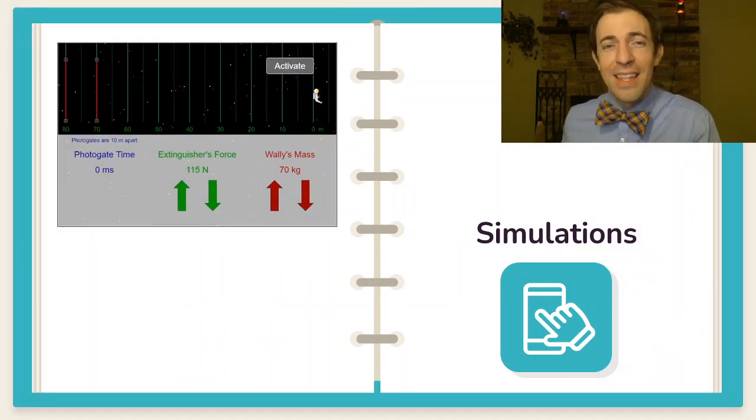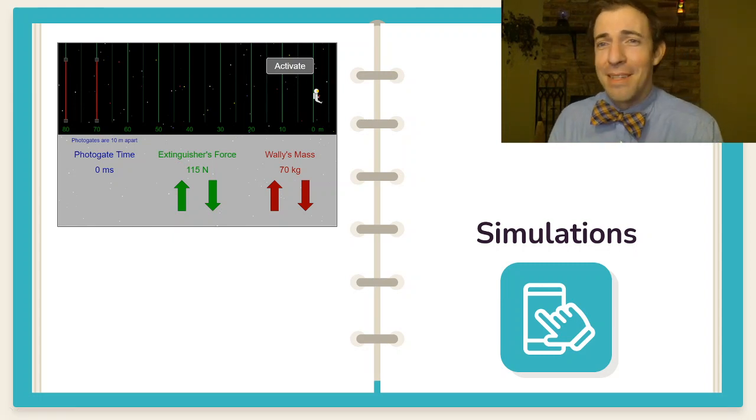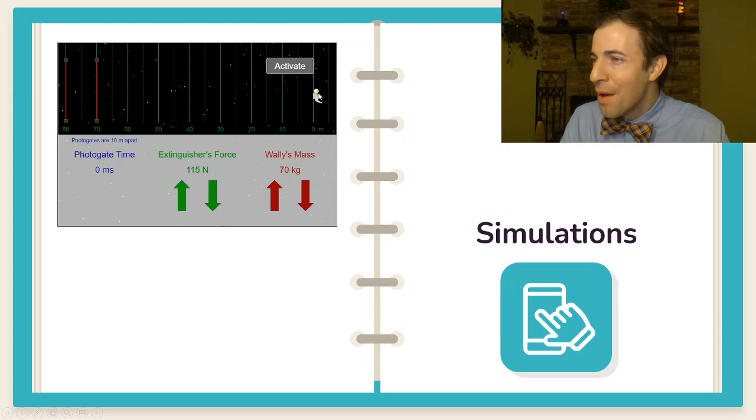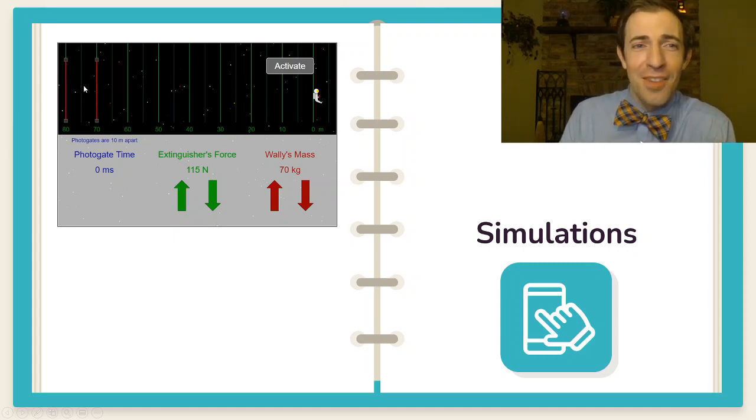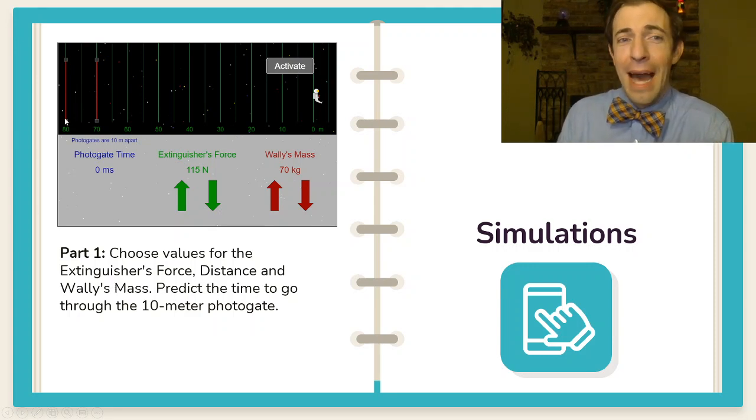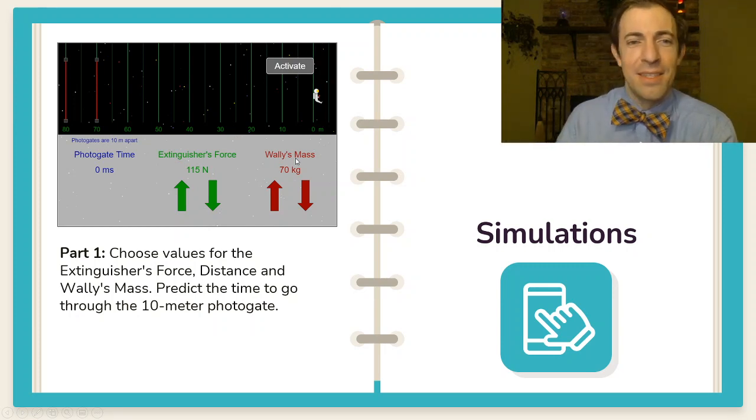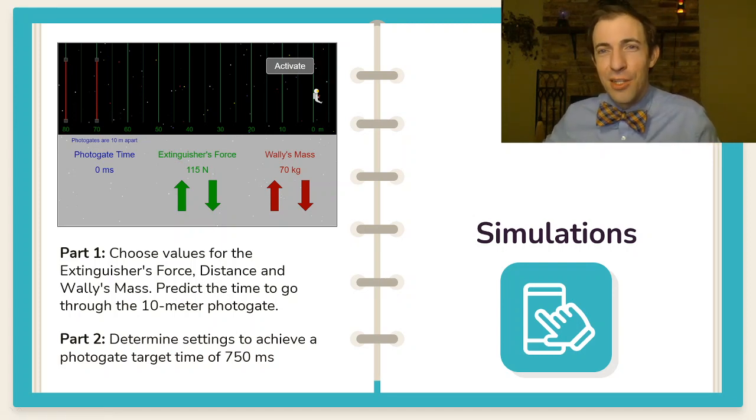And then of course I've also used simulations in my class as a way that students can interact with some of the materials. If you haven't used Physics Aviary in the past it is a phenomenal treasure trove of different simulations and online labs. This one that I use in my energy and work unit is basically a simulation of a little astronaut dude where he fires a fire extinguisher to accelerate over a certain distance and then time the final velocity in this photo gate. Now I have them choose just a random of their choice force distance and mass to then predict using work and energy how fast he should be going and what the time should be through that photo gate. Then they do it and see how close they were. If it doesn't match the simulation they need to go back and try their numbers again. That is the check to see if they understand the mechanics of that system. Then part two is I want them to determine settings to achieve a photo gate target time of 750 milliseconds.